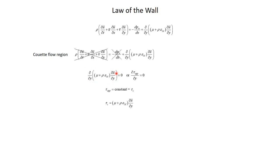Inside those parentheses is what we've been calling the apparent shear stress — the sum of the viscous shear stress, which is the molecular viscosity, and the turbulent transport of momentum, which is the turbulent viscosity. In the Couette flow region, this apparent shear stress must be constant. That's actually what Couette flow means: constant shear stress. And since this region is right next to the wall, that constant equals the wall shear stress tau_s.